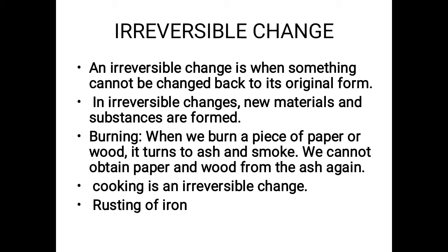When we define irreversible changes, we come to know that an irreversible change is when something cannot be changed back to its original form. In irreversible changes, new materials and new substances are formed, because a chemical reaction happens. For example, burning: when we burn a piece of paper or wood, it turns to ash and smoke, and we cannot obtain paper and wood from the ash again. Cooking is an irreversible change because we get new taste, new color, and new texture, and we cannot get back our raw food from the cooked one. Similarly, iron gets rust because an oxidation reaction takes place.